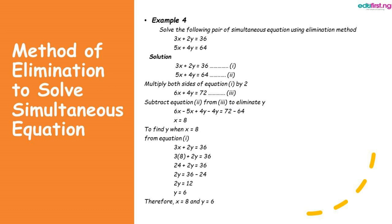Inputting x equals 8 into equation 1, we have 3x plus 2y equals 36, so 3 times 8 plus 2y equals 36. We have 24 plus 2y equals 36, so 2y equal to 36 minus 24, which gives 2y equal to 12. Dividing both sides by 2, we have y equal to 6. So for this example, x equal to 8 and y equal to 6.